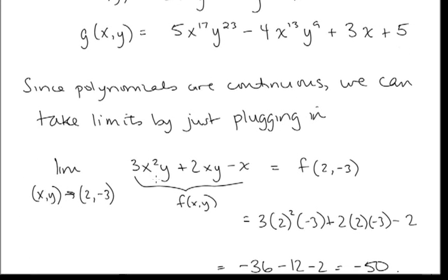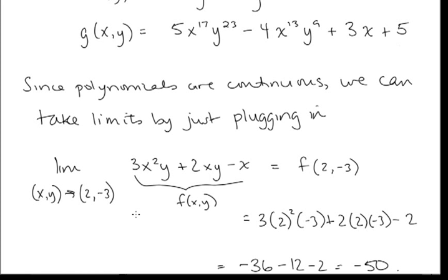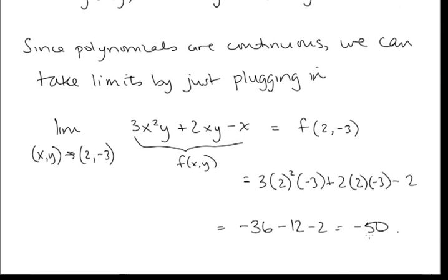For example, in the last lesson we were evaluating limits and showing they exist. Here we know a polynomial function is continuous on the entire xy-plane, so this limit must equal what we get by plugging in (2, −3). This is the same as f(2, −3), which gives us −50.